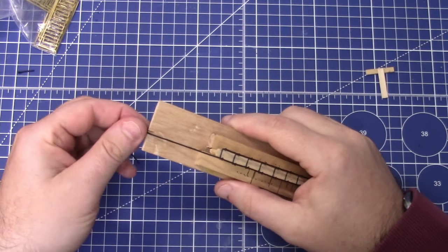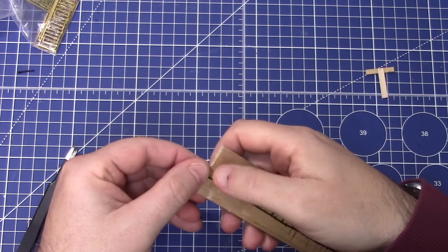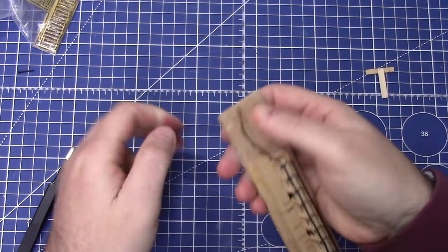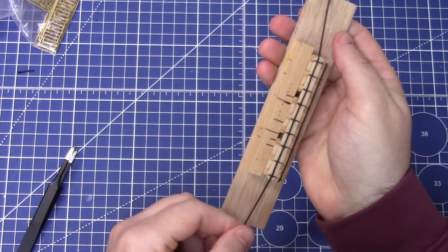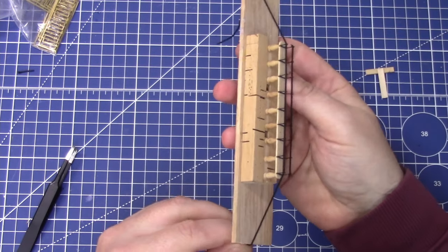So on this jig I've got a little slot. So what I'm going to do is just drop a bit of this thread just down there to kind of pinch it. So that's pinched that there. So I'm going to pull that tight and we'll make it all nice and rigid.